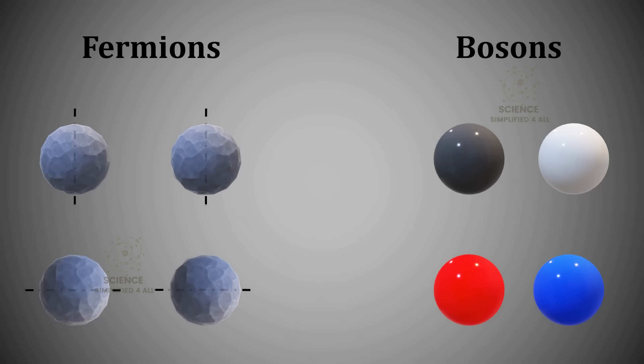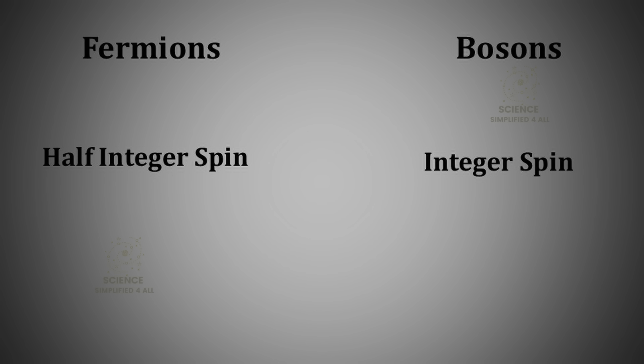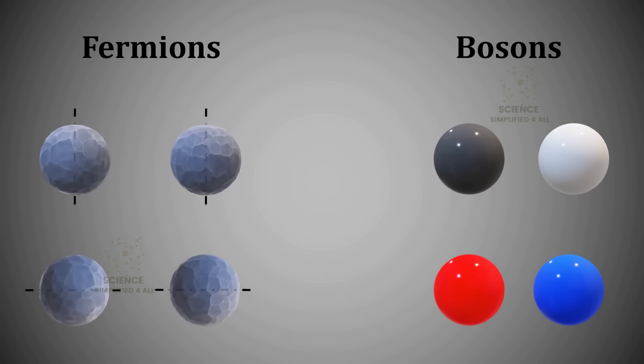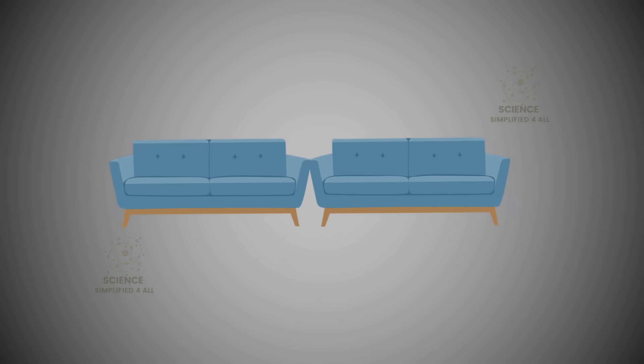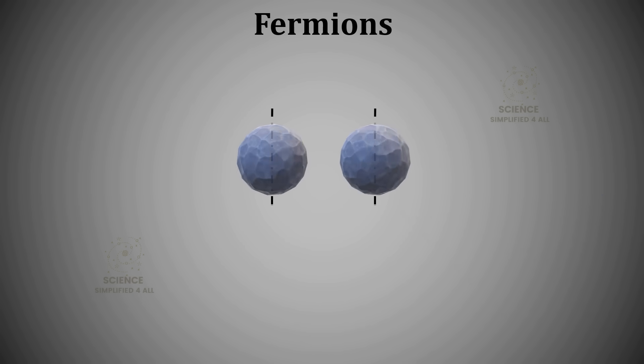The major difference between fermions and bosons lies in a property called spin. Fermions have half-integer spins, while bosons have integer spins. Since this concept of half-integer and integer spin can be a bit difficult to visualize, for now, we can simply think of it this way. Fermions have spin, while bosons effectively behave as if they do not have spin. The most important property of fermions is that no two fermions can exist in the same quantum state at the same time.